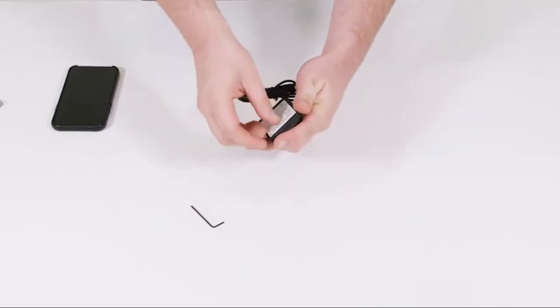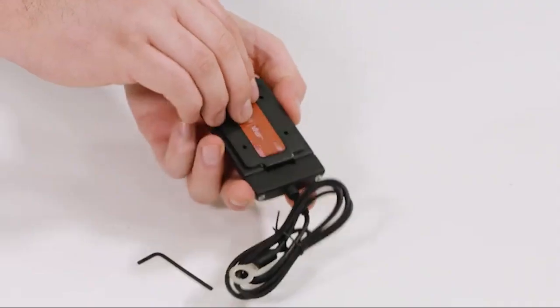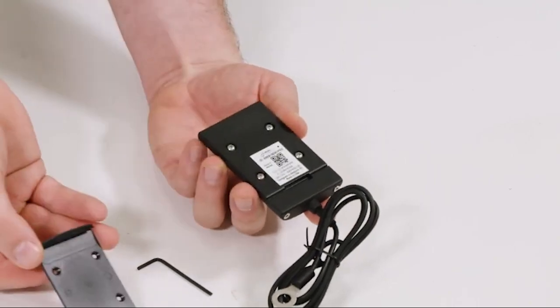Peel the quick start guide from the back of the module and remove the mounting bracket to reveal the QR code.